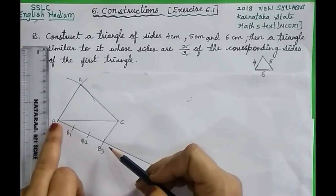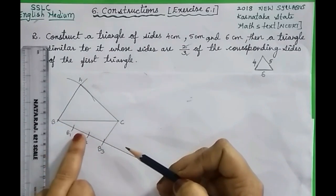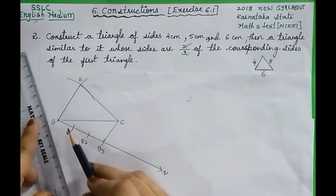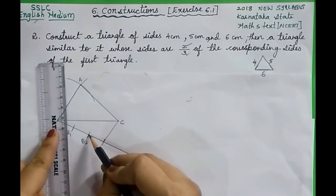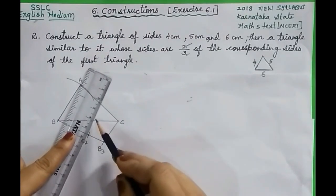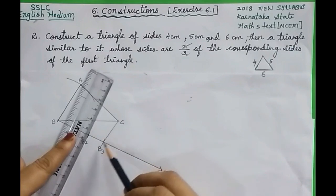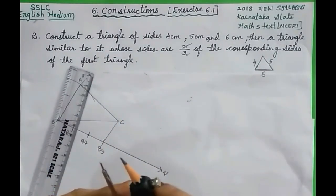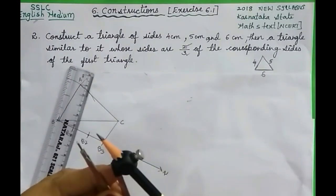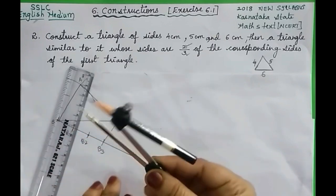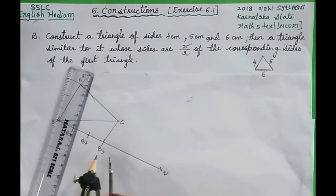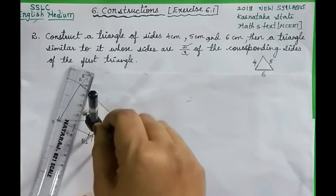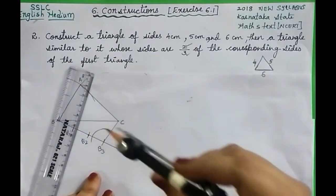So here BC has been divided into 3 equal parts. Next, since the numerator is 2, from the 2nd part — that is from point B2 — we have to draw a parallel line to B3C. The line should be parallel to B3C. For this, take a compass of any radius and draw an arc. This method is for constructing a parallel line.